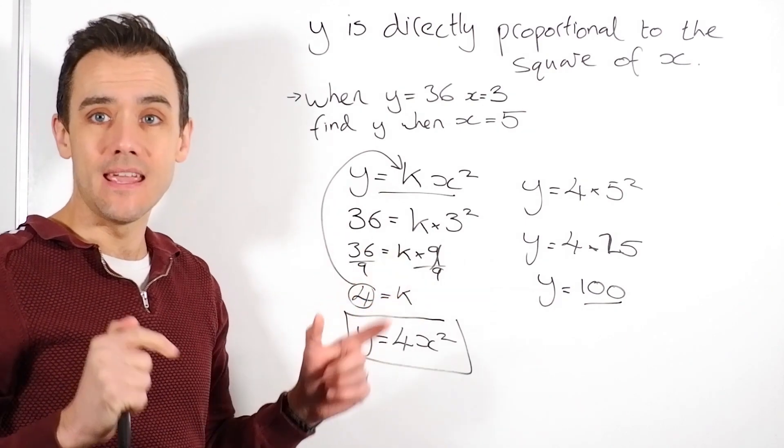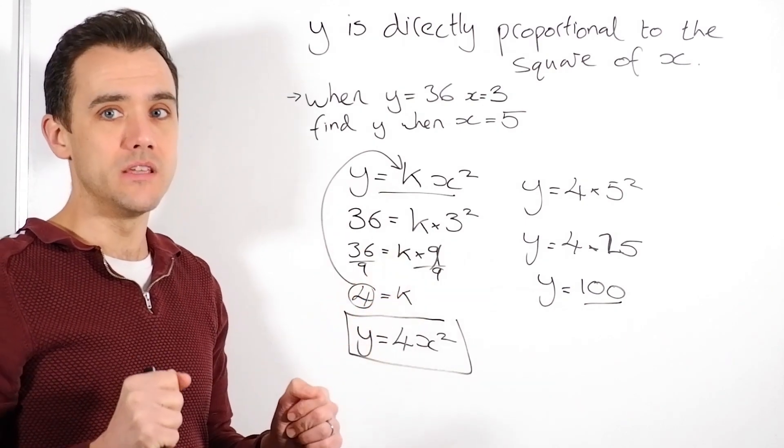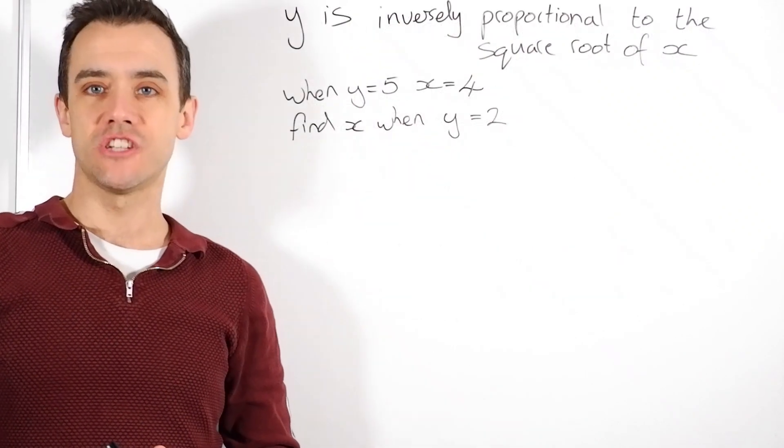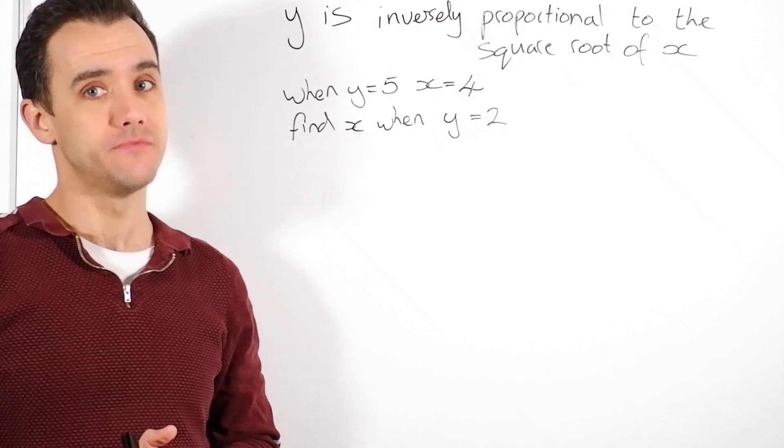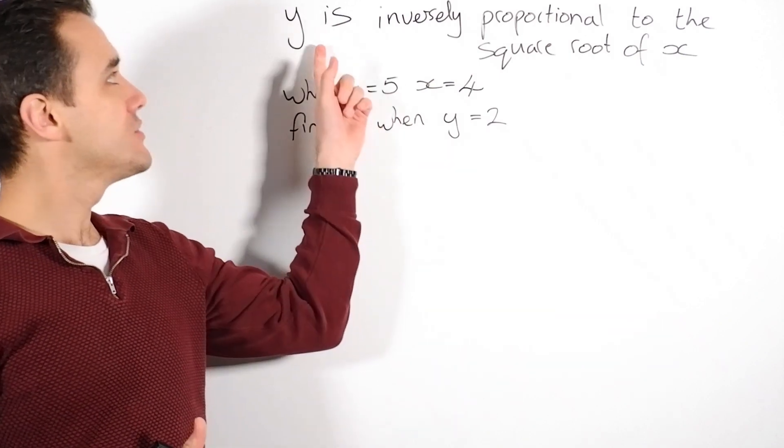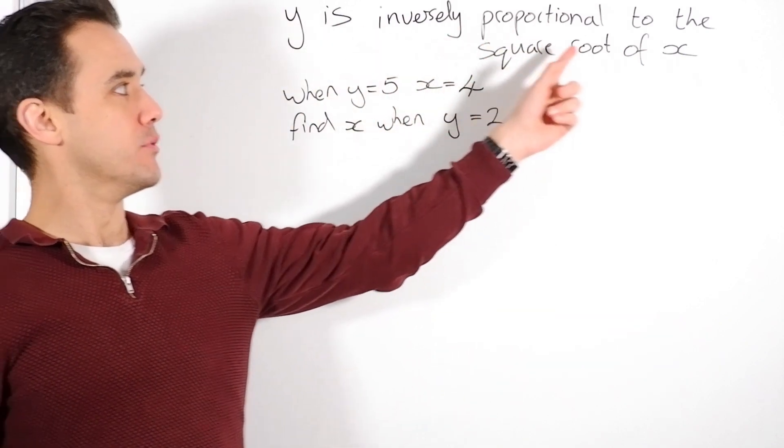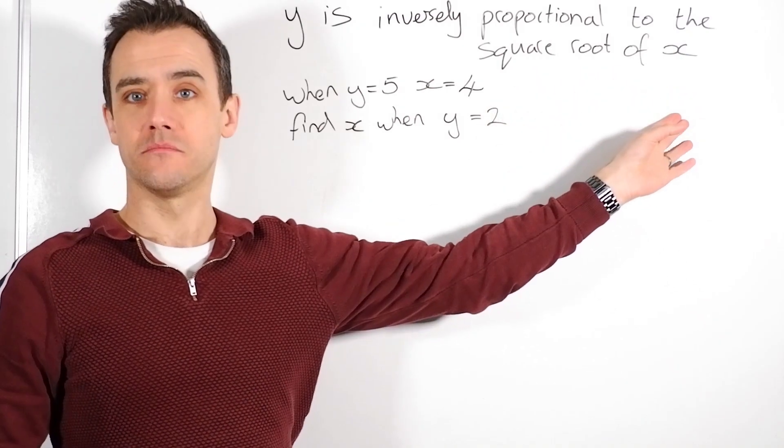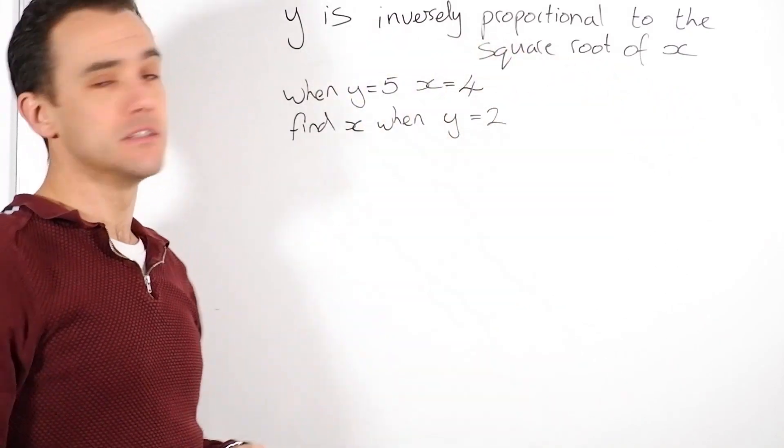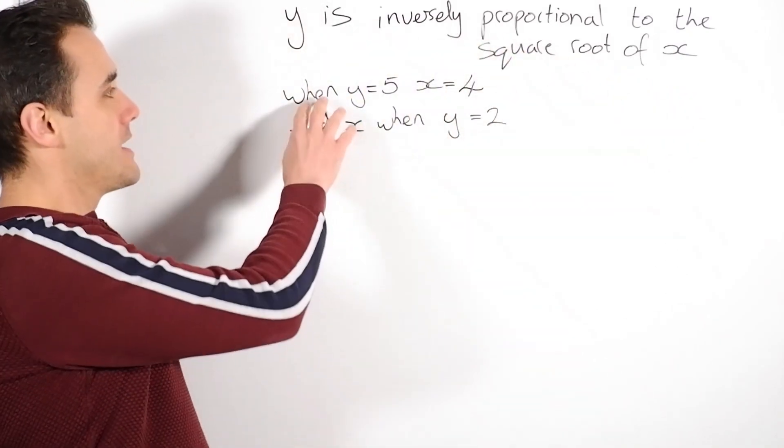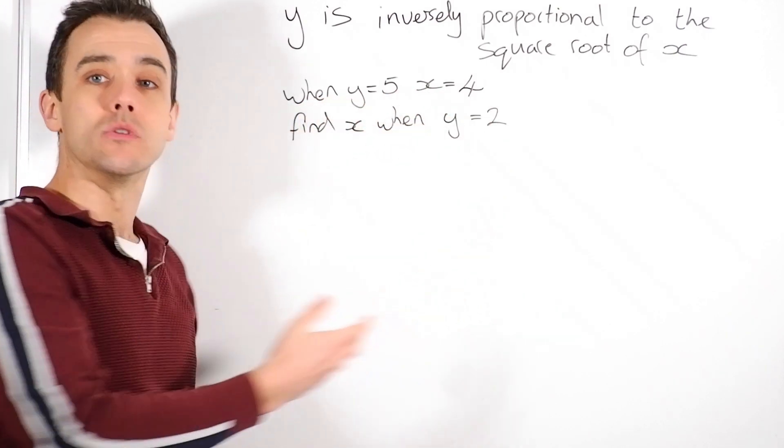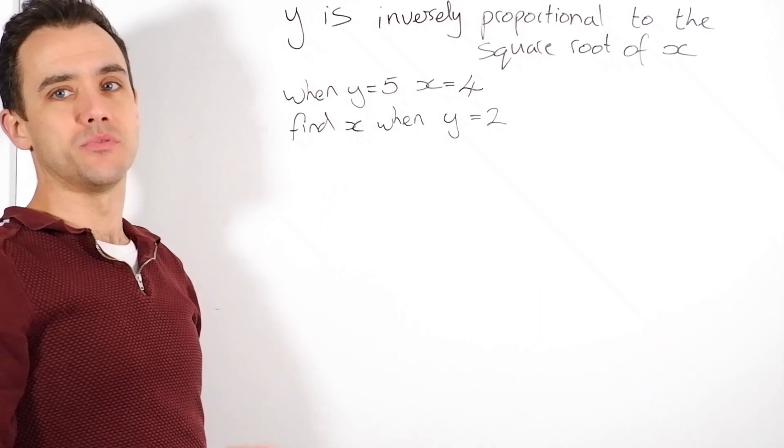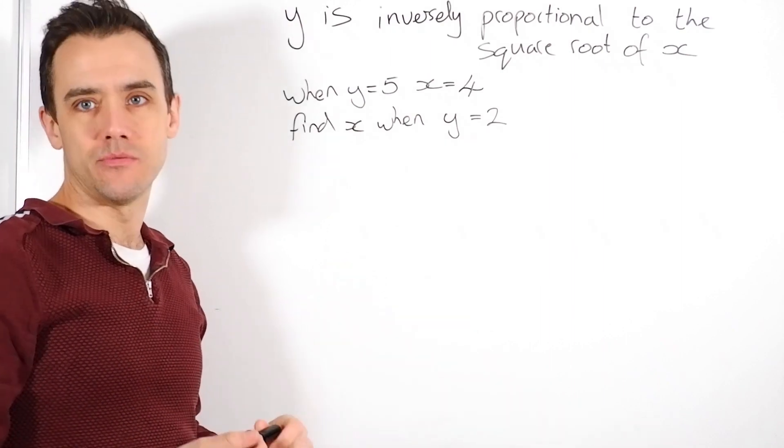Now we'll look at inversely proportional, which is very slightly different. Okay, so inversely proportional. I've got another question up on the board. And it looks very similar to the one we just did. This time we've got y is inversely proportional to the square root of x. Just to show you some slightly different numbers. So now it's told us when y is 5, x is 4. Find x when y is 2. So very similar in style to the previous question.